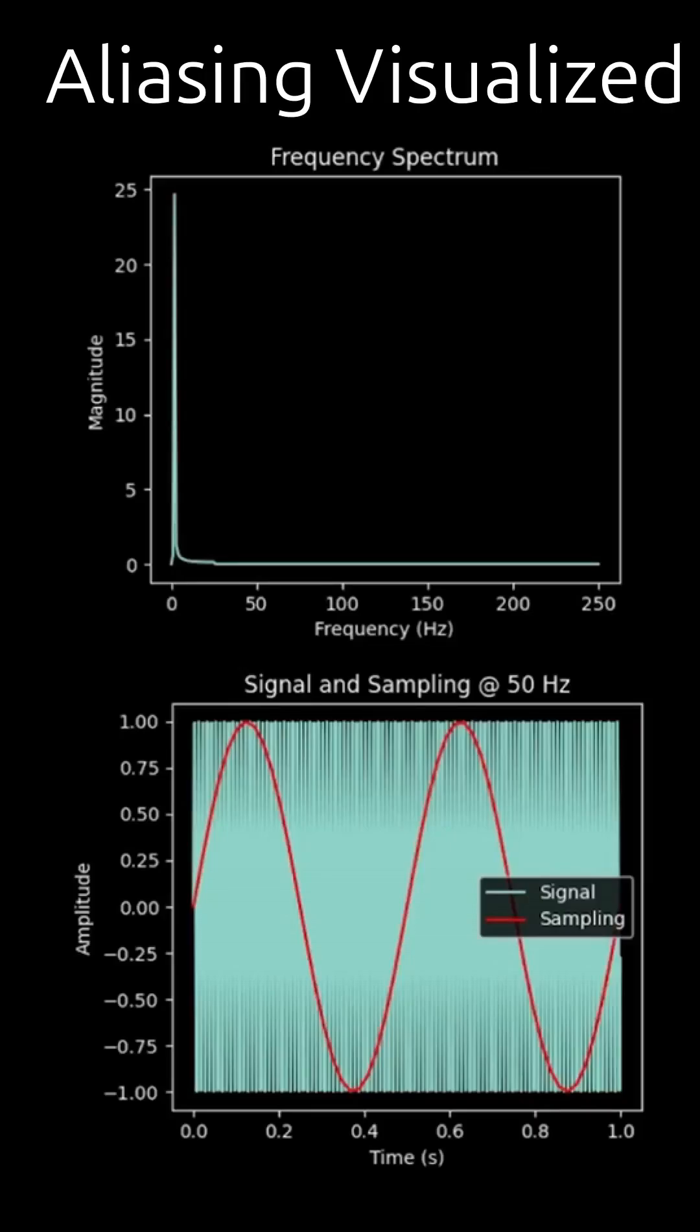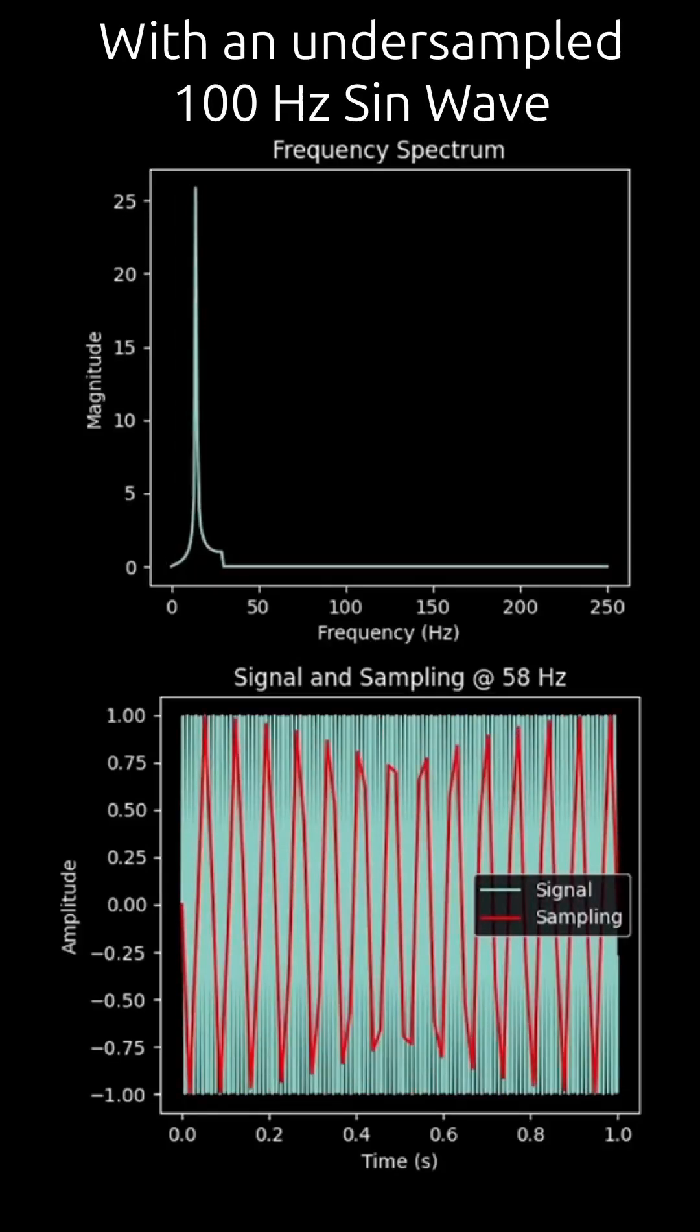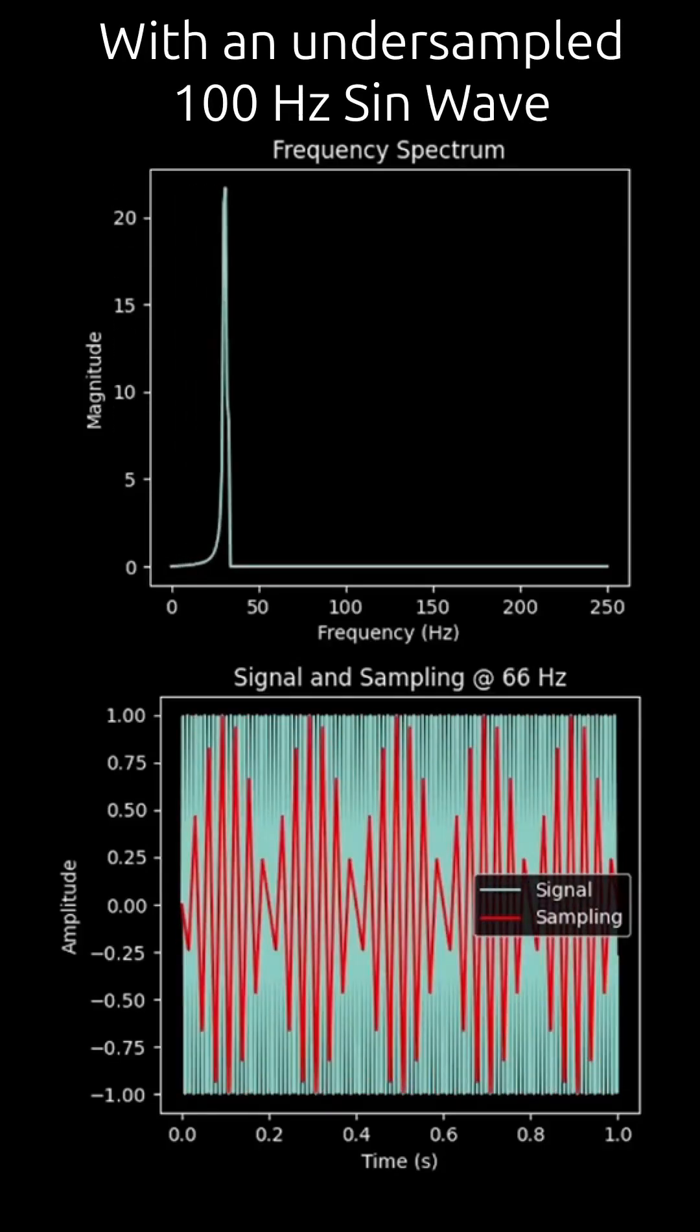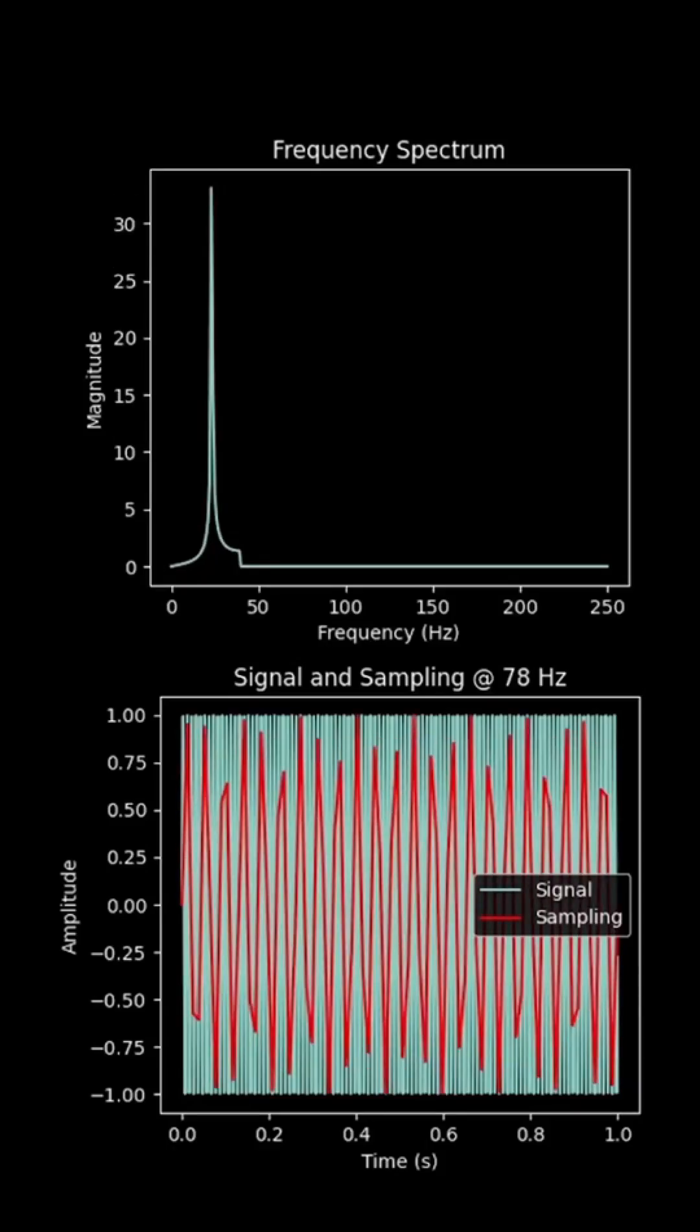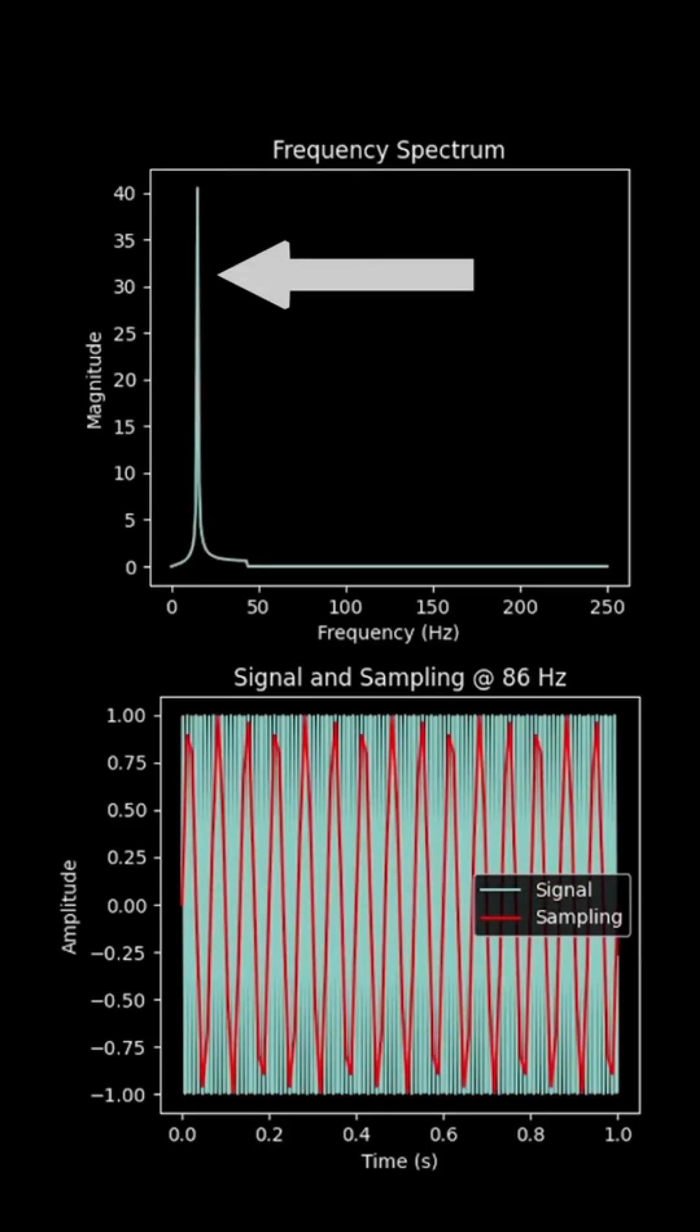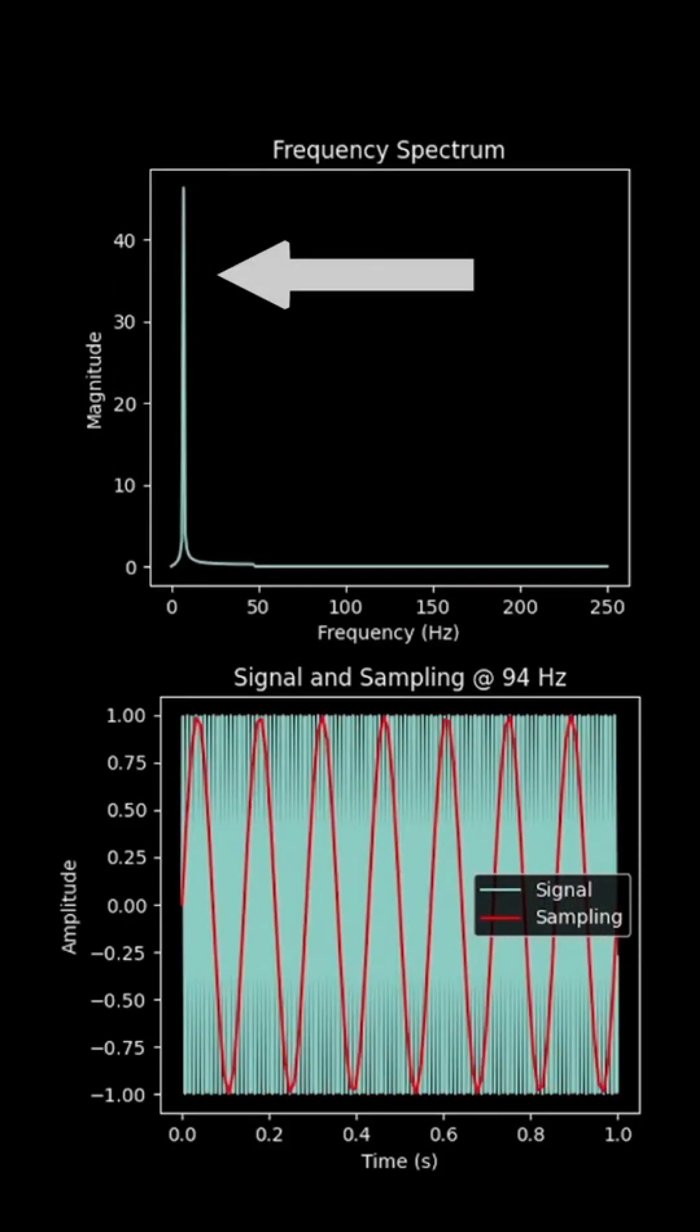Just watch what happens to our measurement as we start to increase our sampling. Here you can see our sampling is beginning to change. We're taking more and more samples across this one second of data, and you can see that our spike or our measurement for the frequency is starting to shift and bounce around and move around.